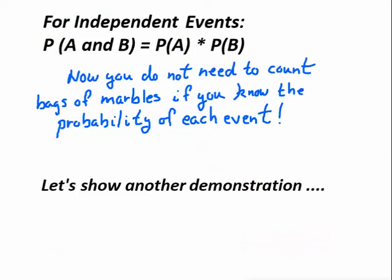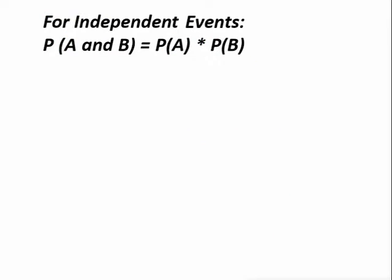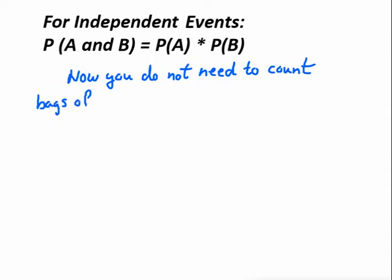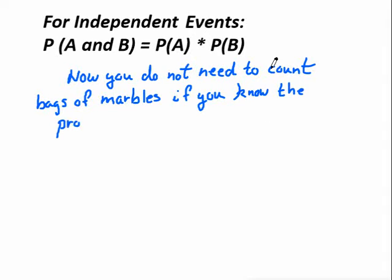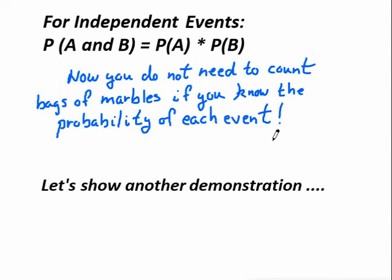For independent events, the probability of event A and event B both happening is equal to the probability of A times the probability of B. So now you don't actually need to count marbles or draw trees — just use the formula.